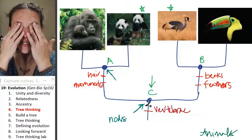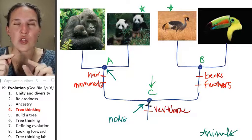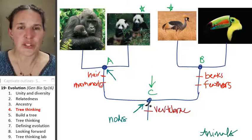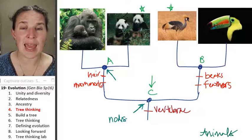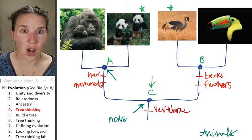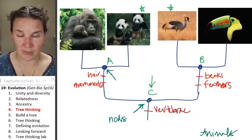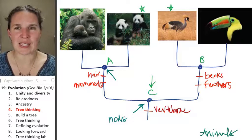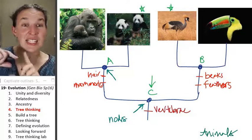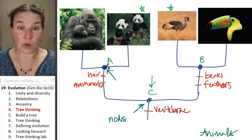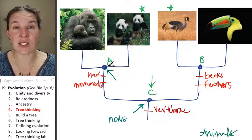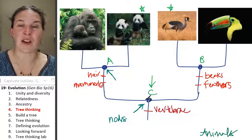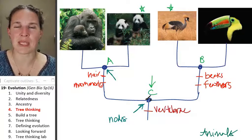And we know already that the nodes represent ancestors. And are you ready for this? Trees can rotate around nodes. So if we put gorilla and panda on this tree, it doesn't matter if we put the gorilla on the left or the panda on the left. Like, it doesn't matter. We can actually spin the tree at the node. And the relationships that are demonstrated are exactly the same. So it doesn't matter how we put them up there. And that's a really important piece of the puzzle.